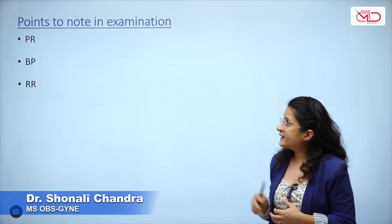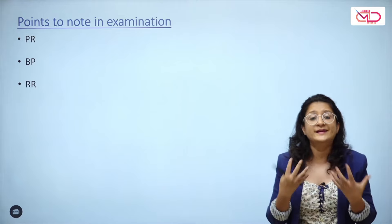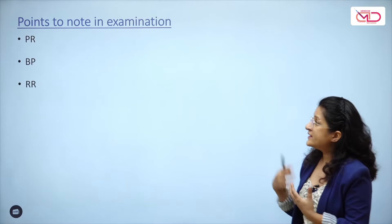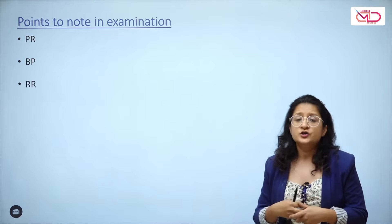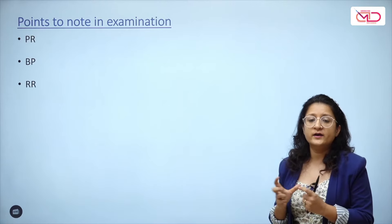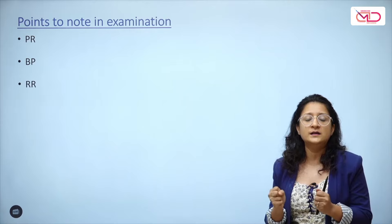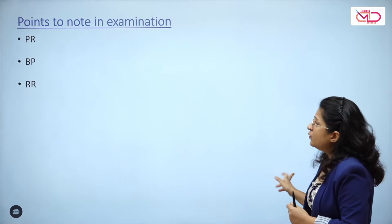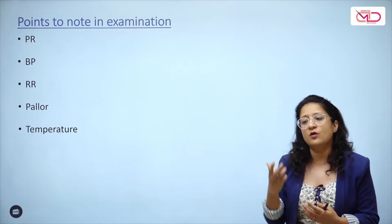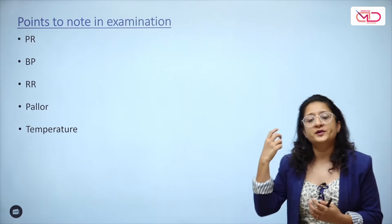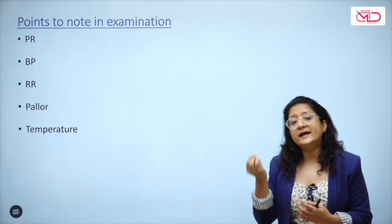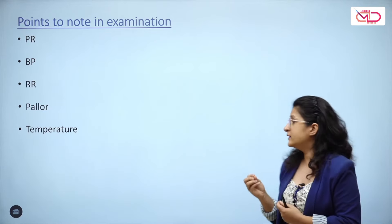Once history is taken, move to examination. When a patient presents with bleeding, check the vitals — pulse rate, blood pressure, respiratory rate — to assess hemodynamic stability. For someone arriving at the casualty as an emergency, these vitals are critical. Also look for clinical evidence of pallor. Check the temperature as well — do not skip the basics. It could be a septic abortion or underlying infection of uterine contents.